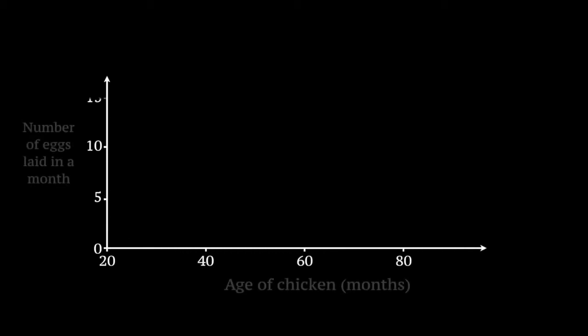If two variables appear to have a linear relationship, then we can model that relationship using linear regression. For example, let's say we wanted to investigate the relationship between the age of a chicken and the number of eggs that it lays in a month.